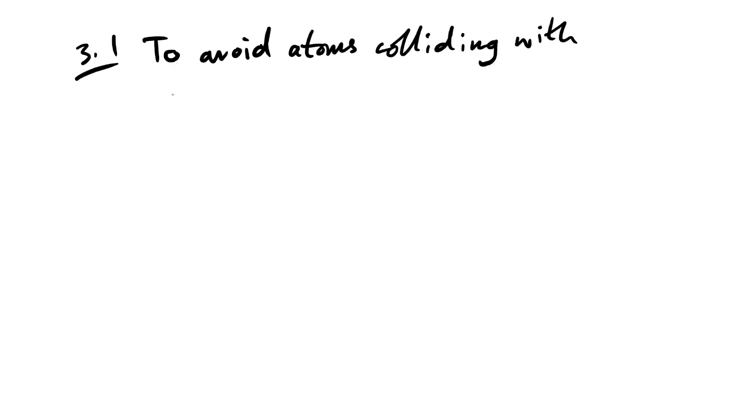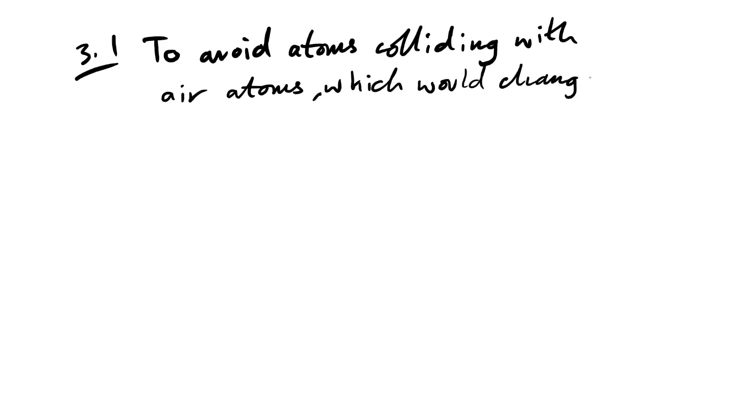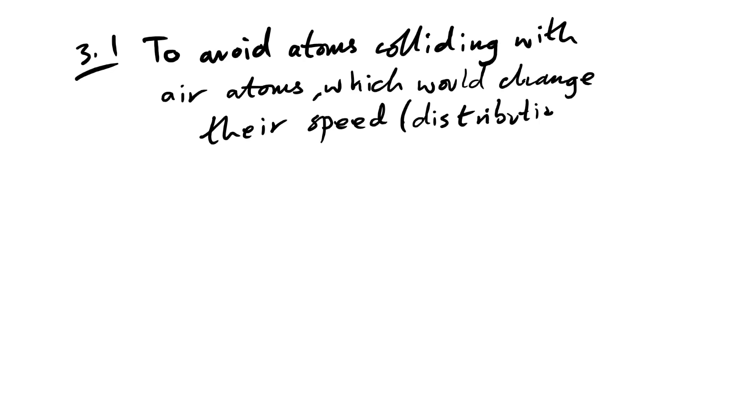Question 3: we have this apparatus to confirm the distribution of atom speeds. The oven contains an ideal gas and atoms emerge from a passage. Why must the drum be in a vacuum? We can say: to avoid atoms colliding with air atoms, which would change their speed — or more precisely, their speed distribution.